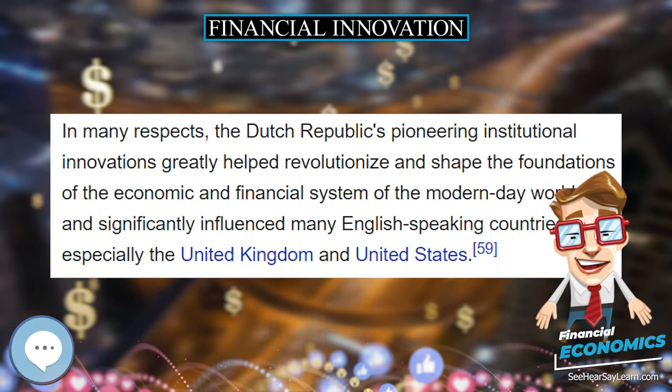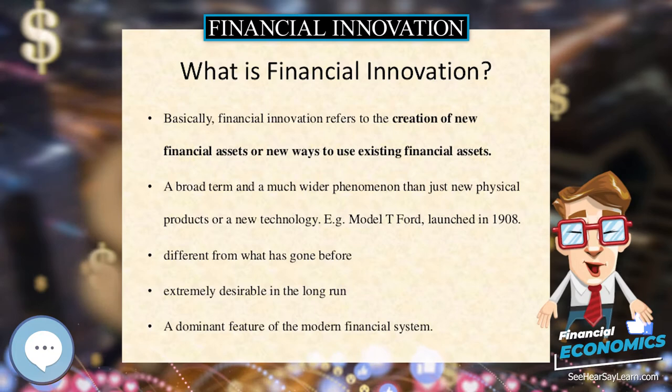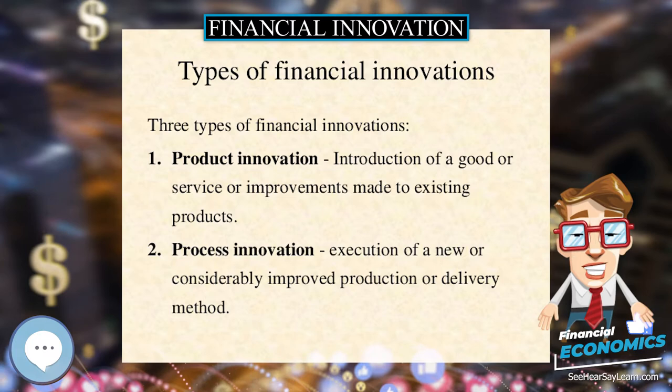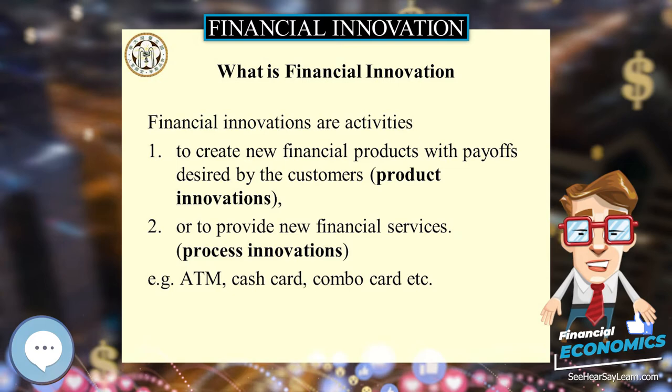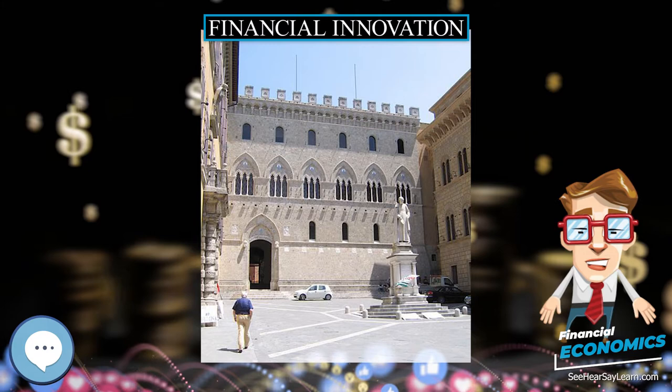Academic literature: Tofano (2003) and Duffy and Rahi (1995) provide useful reviews of the literature. The extensive literature on principal-agent problems, adverse selection, and information asymmetry points to why investors might prefer some types of securities, such as debt, over others like equity.